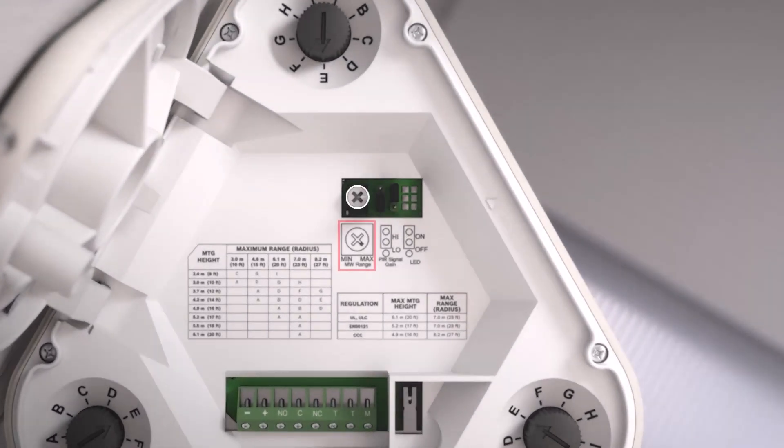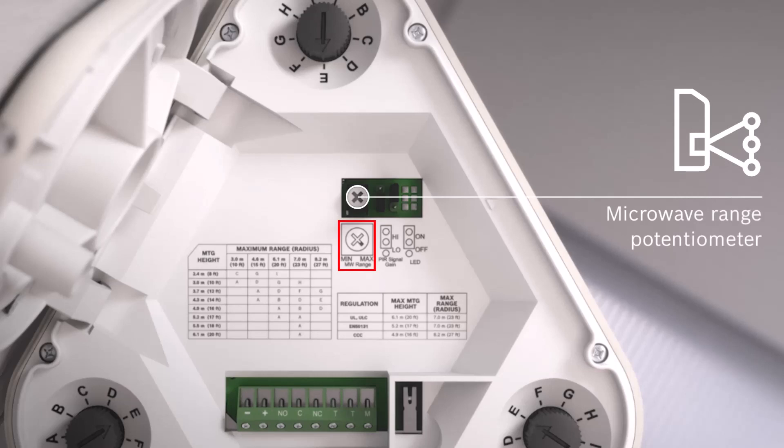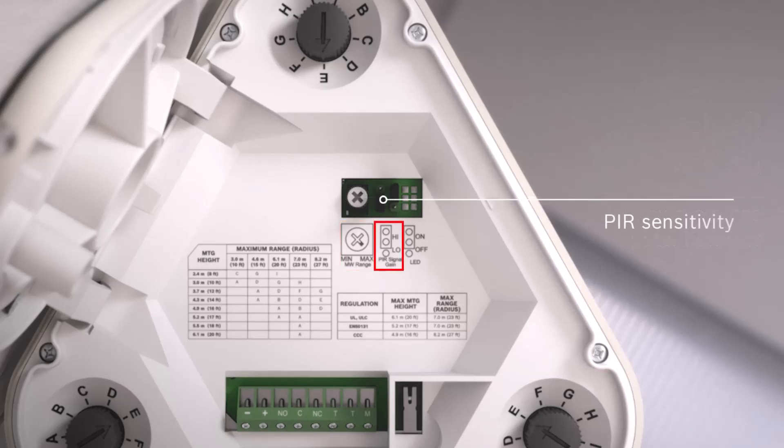For the Tritec series, the microwave range can be adjusted with a potentiometer. Turn clockwise to increase and counter-clockwise to decrease the microwave range. PIR sensitivity can be set to low or high. The tricolor LED may also be turned on or off.